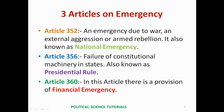Article 356, also known as Presidential Rule, is imposed when the governor of any state reports to the President that the constitutional machinery has failed in that particular state and the President is satisfied. During state emergency, the union government has absolute control over the state except the judiciary. This article has been applied many times in various states in India.